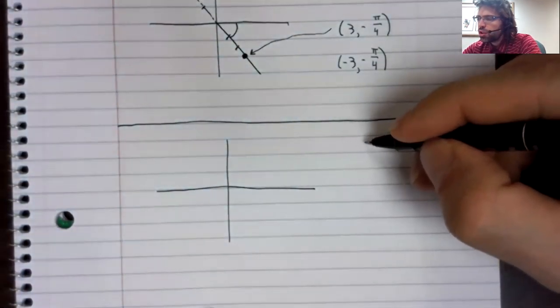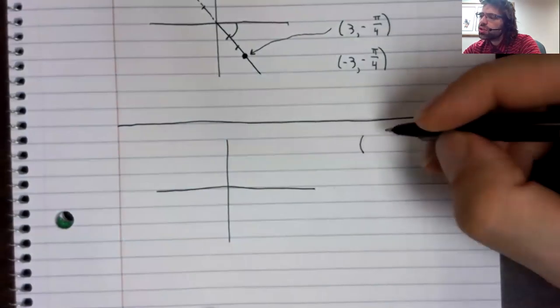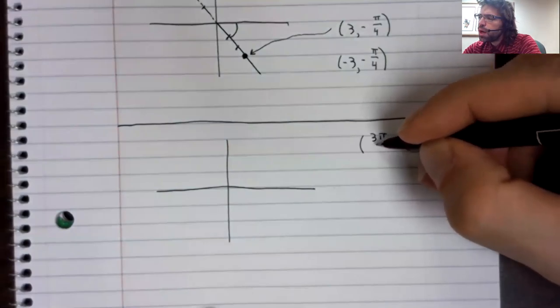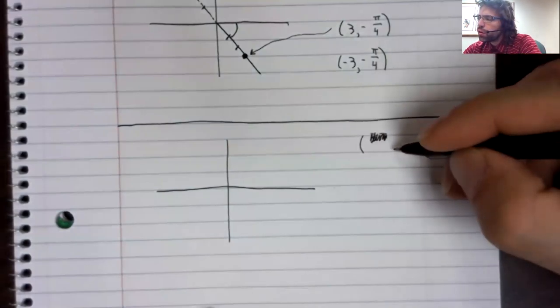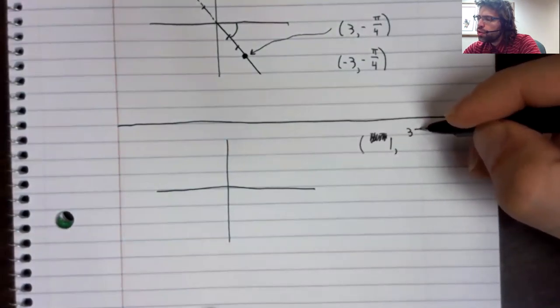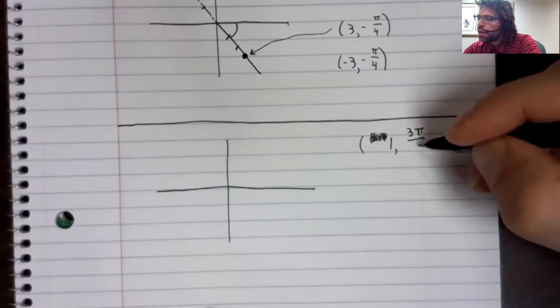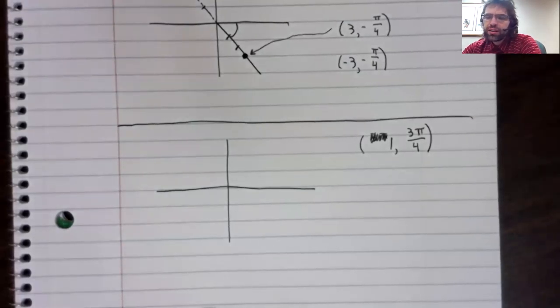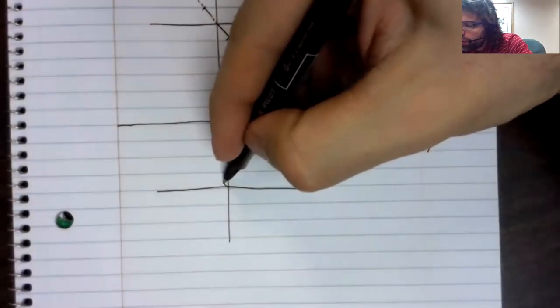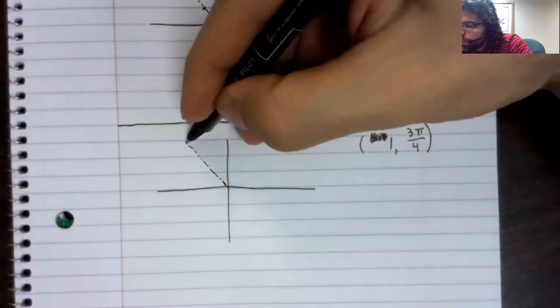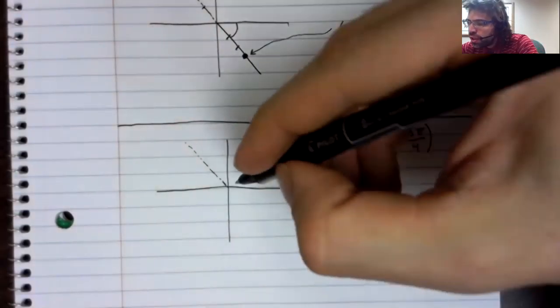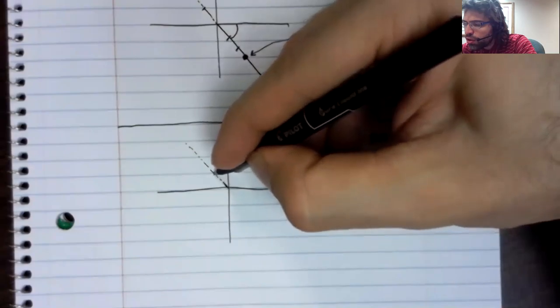Let's look at 3 pi over 4 and 1 as our theta and our radius. 3 pi over 4 takes us into the second quadrant, and we go a distance of 1 unit.